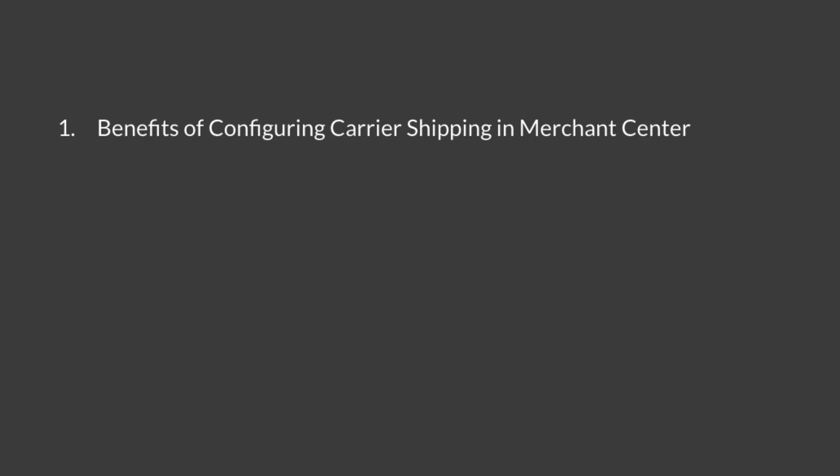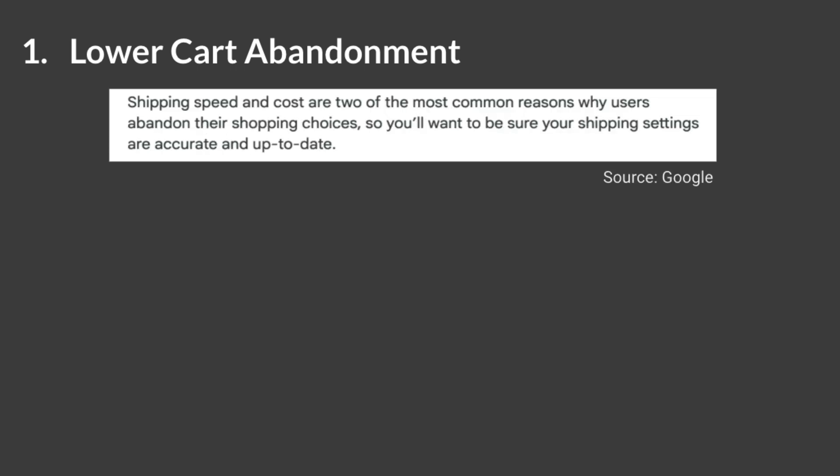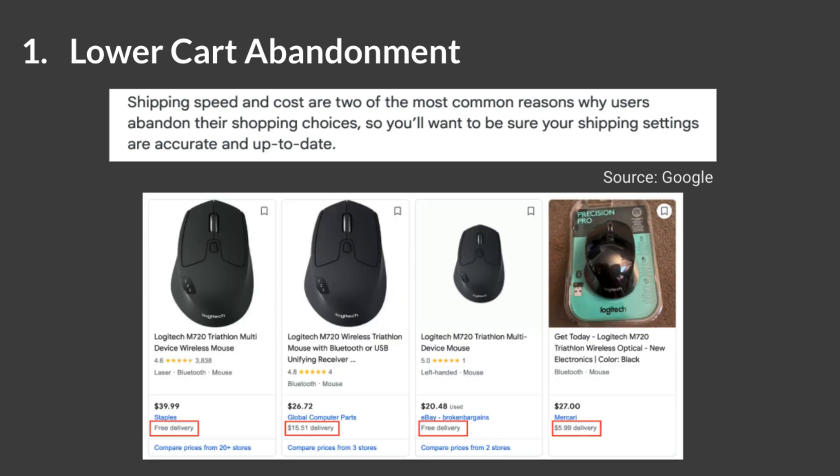First, we'll look at the benefits of configuring carrier shipping in Merchant Center. There are two main benefits. The first is lower cart abandonment. Google names shipping costs as one of the most common reasons users abandon their shopping choices and recommends keeping your shipping information accurate. Shipping costs shown early in the purchase journey add transparency and users will be more likely to complete their purchase.